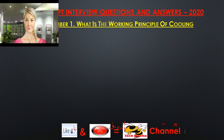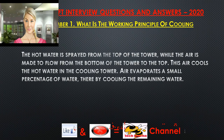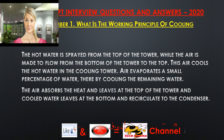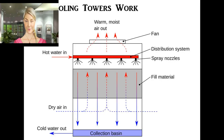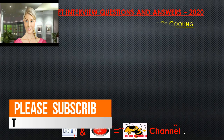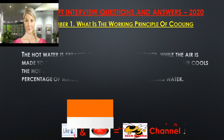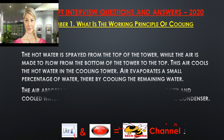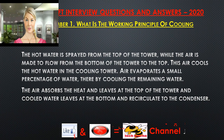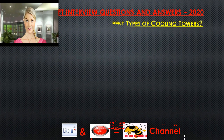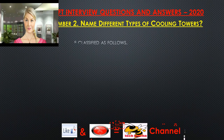Question 1: What is the working principle of cooling towers? The hot water is sprayed from the top of the tower while air is made to flow from the bottom to the top. This air cools the hot water; it evaporates a small percentage of water, cooling the remaining water. The air absorbs the heat and leaves at the top, and cooled water leaves at the bottom to recirculate to the condenser.